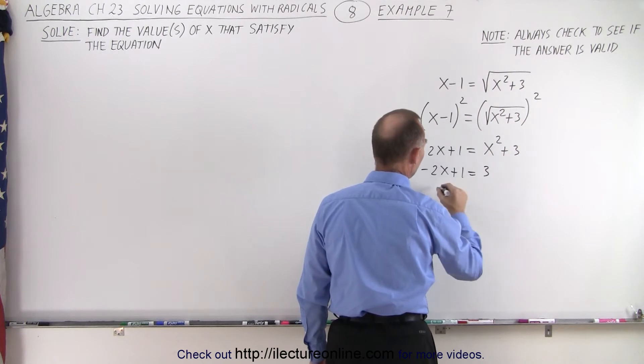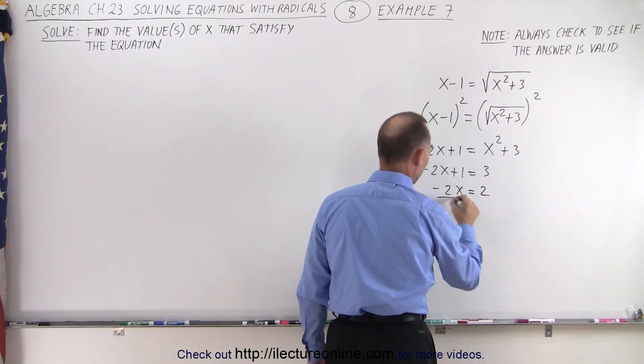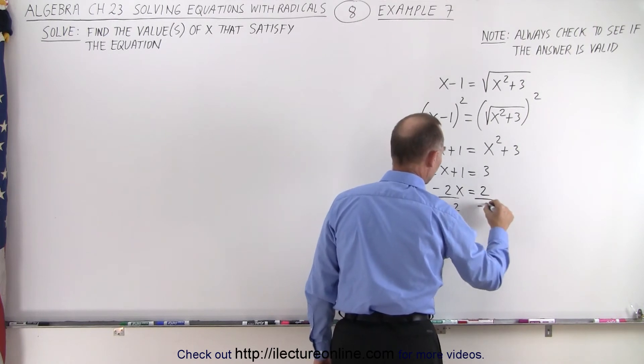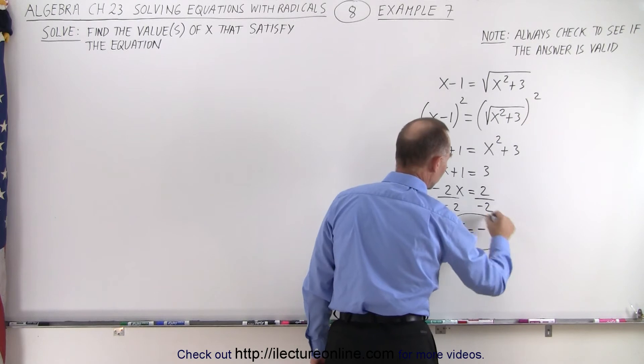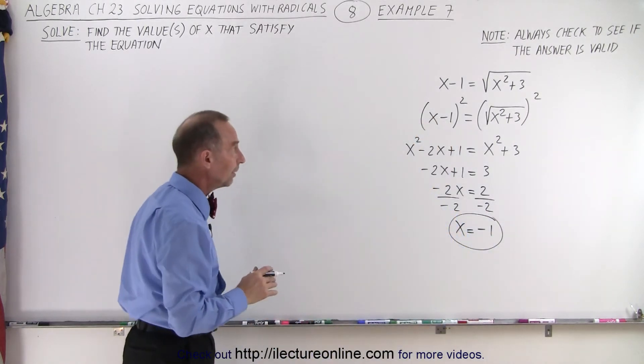Move that across, we get minus 2x is equal to 3 minus 1, which is 2. And divide both sides by negative 2. We get x equals negative 1. And so, that's the only possible solution we end up with.